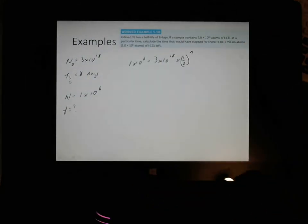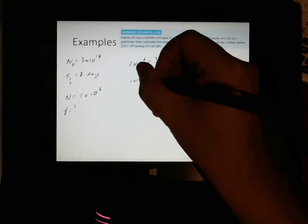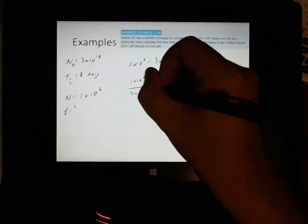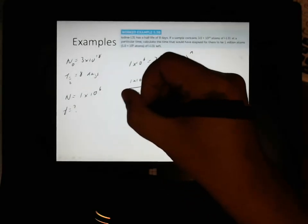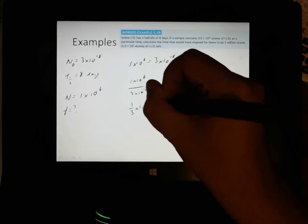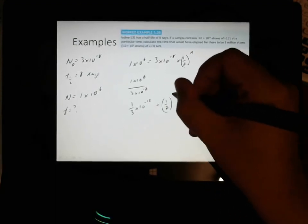Let's plug it into the formula. We have that 1 times 10 to the 6 equals 3 times 10 to the 18 times 1 half to the power of N, and we don't know what N is. So, let's firstly work out what N is, and then we'll worry about working out what time, in terms of days, is equal to. The way we rearrange this, we can divide this number over. So, we're going to have 1 times 10 to the 6 divided by 3 times 10 to the 18, which is going to be 1 over 3 times 10 to the negative 12, or, let's just leave it as 1 over 3 times 10 to the negative 12, for the moment, equals 1 half to the power of N.